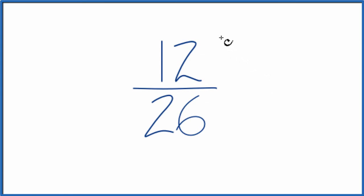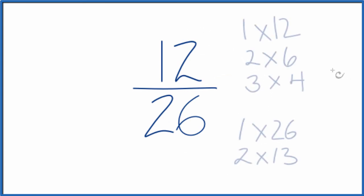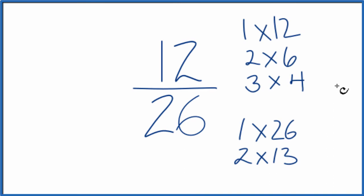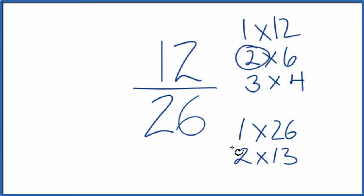Here are the factors of 12 and 26. We're looking for the greatest common factor, and it looks like the greatest common factor between 12 and 26 is 2. So we divide 12 by 2 and 26 by 2, and we'll have simplified 12/26.